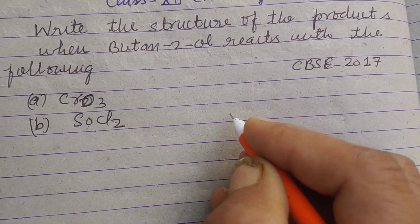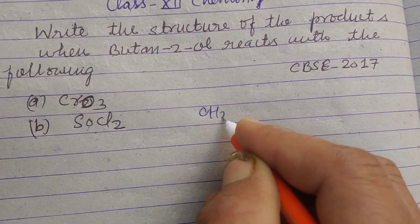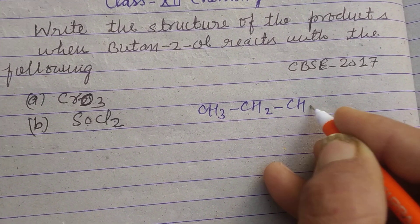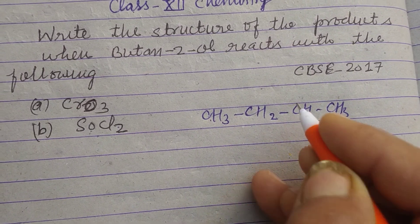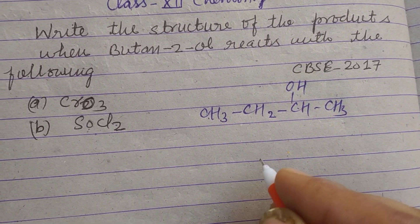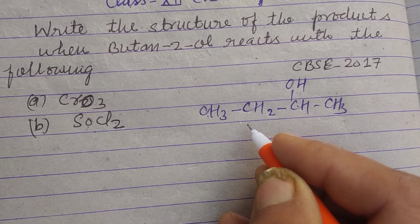So butan-2-ol, first we write: this is CH3-CH2-CH-CH3. 1, 2, 3, 4. So this is OH. So this is butan-2-ol.